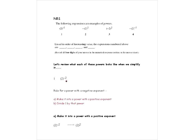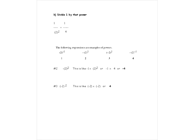The first one is 2 to the minus 2. When we have a negative exponent, there are two things we do to simplify it. Step A: make it into a power with a positive exponent, so 2 to the minus 2 becomes 2 to the 2. Step B: divide 1 by that power — so we get 1 over 2 squared. Since 2 times 2 equals 4, the answer is 1 over 4, or one quarter.